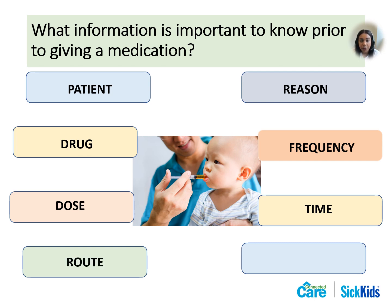Seventh, the right route — you can check to ensure how the medication is given: by mouth, through a feeding tube, or by injection. Eighth, the right site. If you have any concerns about the above information, stop and do not administer the medication until it is confirmed.